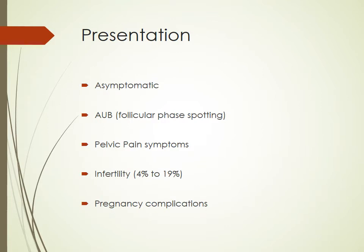When it comes to presentation, some patients are asymptomatic. Almost 75% present with abnormal uterine bleeding, usually spotting during the follicular phase, along with some discharge. This is classical, as opposed to progesterone deficiency which leads to luteal phase bleeding anomalies. These patients also present with pelvic pain symptoms including chronic pelvic pain, dysmenorrhea, dyspareunia, and 4 to 19% may present with infertility. Other pregnancy-related complications include caesarean scar pregnancy, placenta previa, placenta accreta, and uterine rupture with associated bleeding.